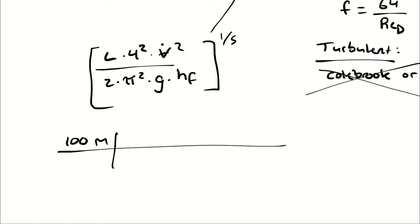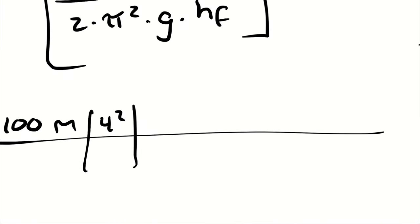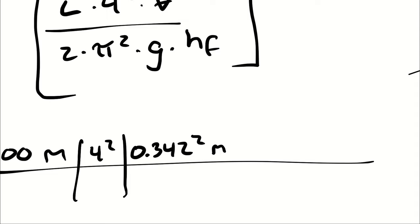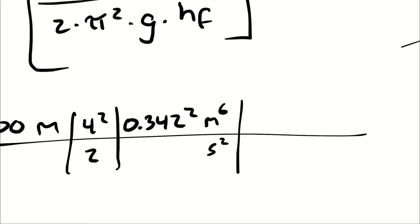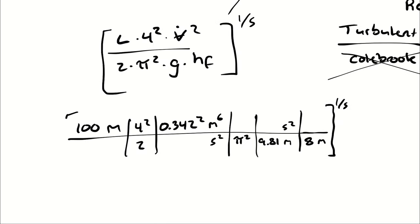So I have 100 meters times 4 squared times 0.342 meters cubed per second, squared — giving meters to the sixth per second squared — divided by 2, divided by pi squared, times 9.81 meters per second squared, times 8 meters. I have meters times meters to the sixth giving meters to the seventh, then subtracting 2 leaving meters to the fifth, and second squared cancels second squared. So the only unit remaining is meters to the fifth, and when I take that to the one-fifth power I'm left with a quantity in meters.